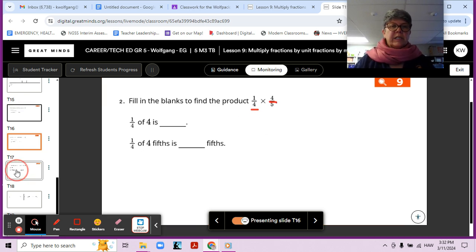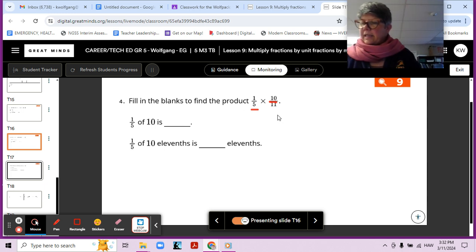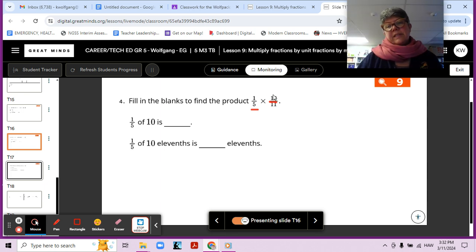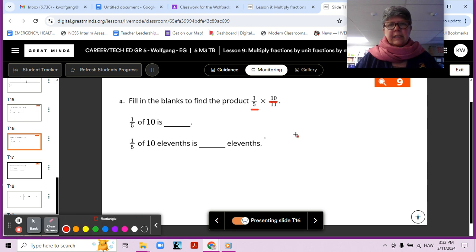So we have matching numbers. But look at this one, one fifth of ten elevenths. So this is different, right? Because here we have a 10. But do you notice something about that 10? Five times two is 10. So 10 is a multiple of five.